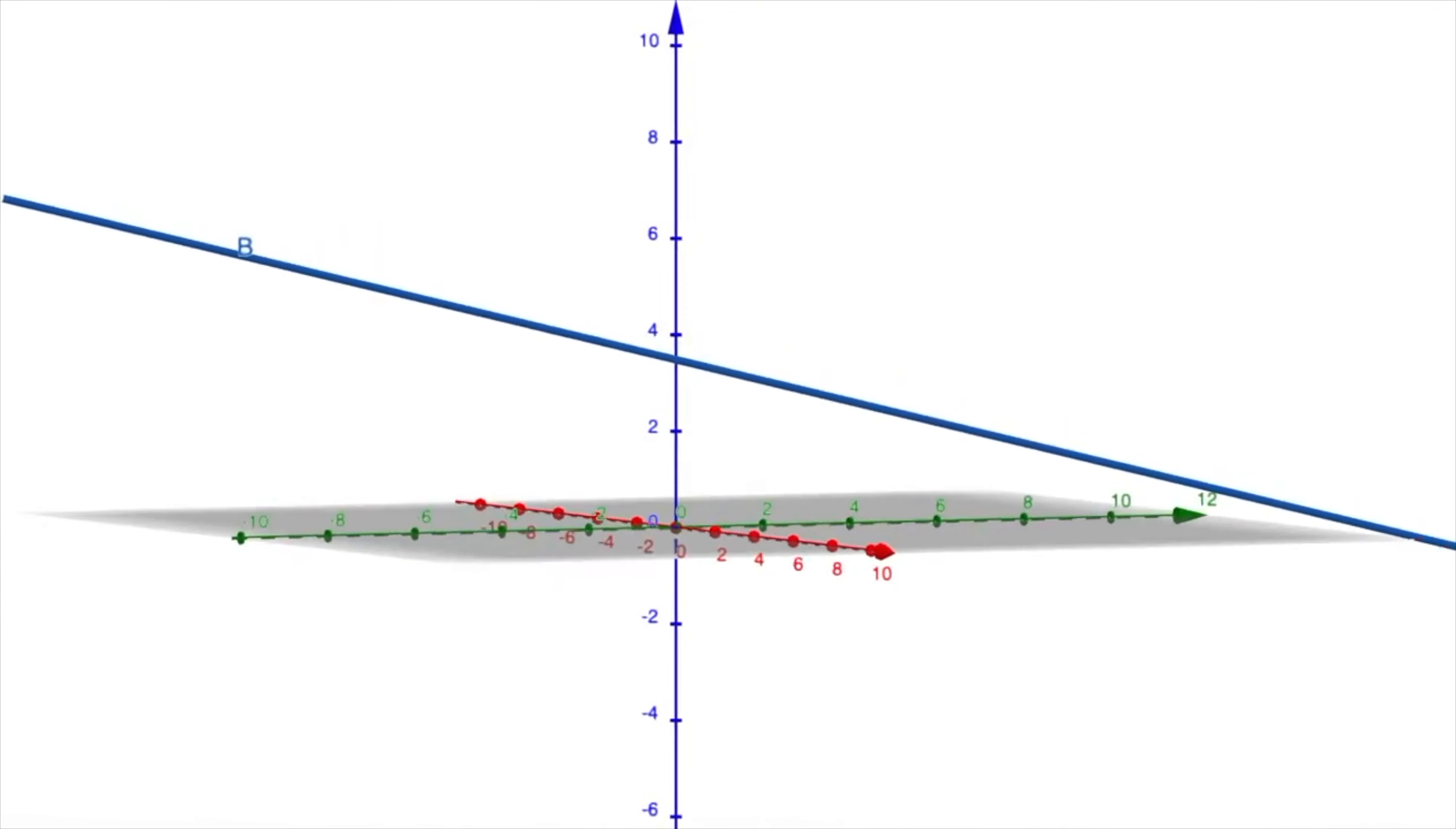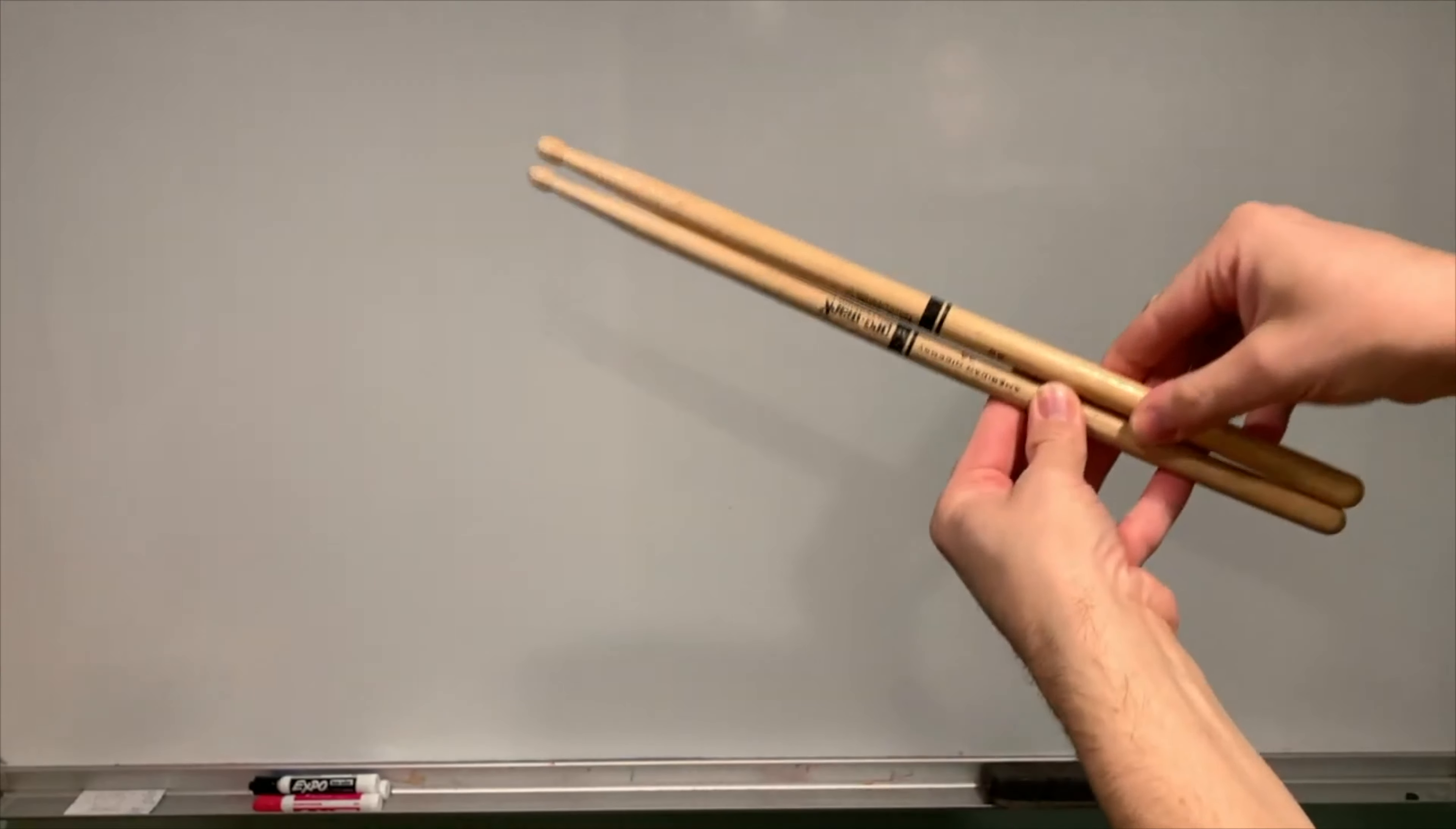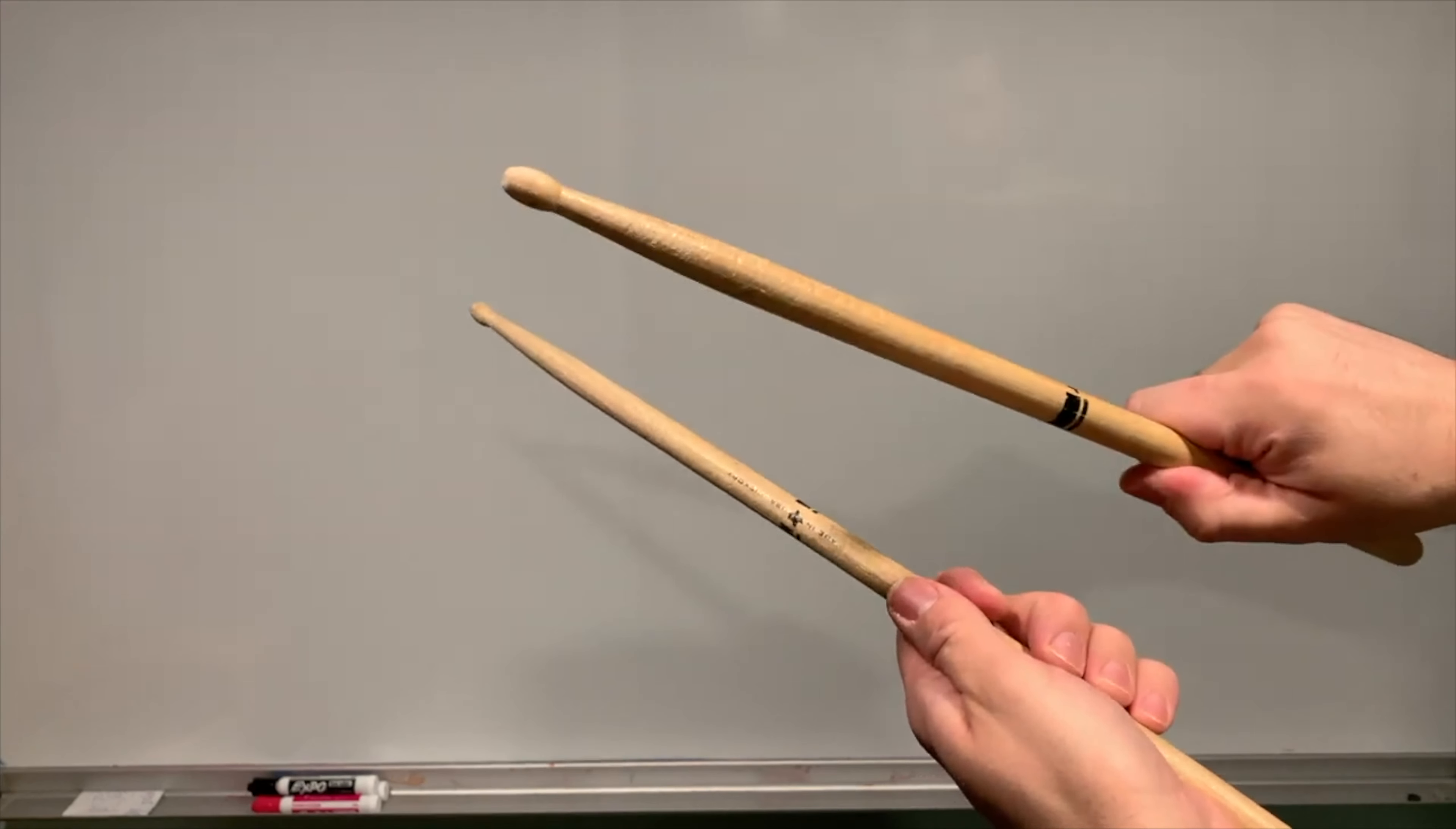Lines in three-dimensional space are a bit complex. They can intersect once, they can be parallel, coincident, or they can even be skew. But is it possible to find out if two lines in 3D are parallel without looking at their graph?